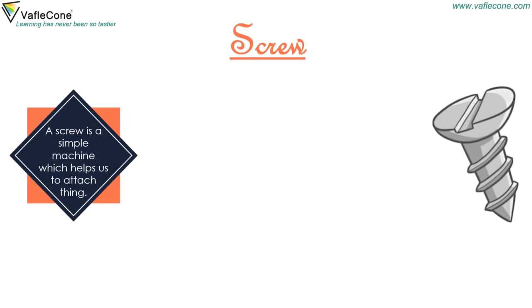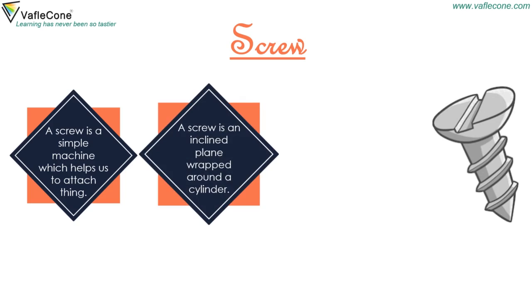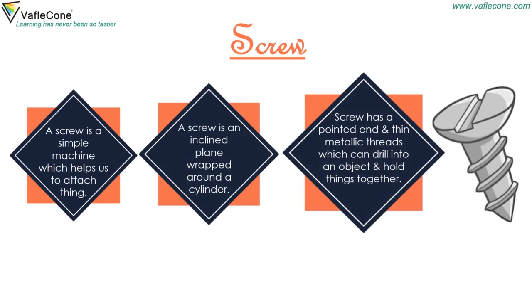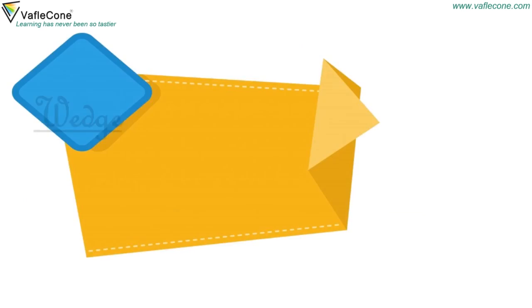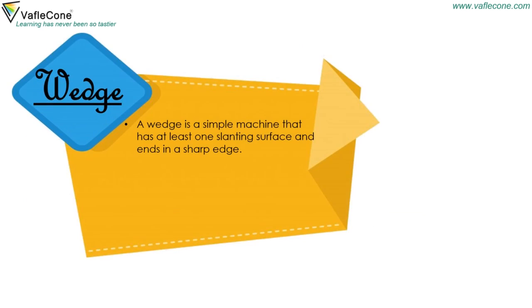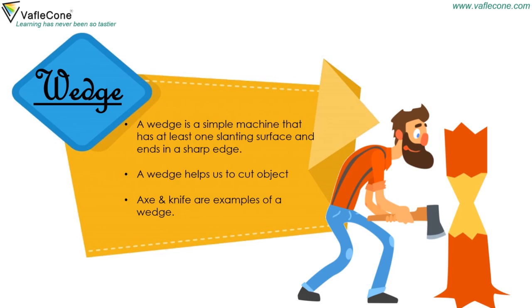A screw is a simple machine which helps us to attach things. It is an inclined plane wrapped around a cylinder, with a pointed end and thin metallic threads that can drill into an object and hold things together. A wedge is a simple machine that has at least one slanting surface and ends in a sharp edge. A wedge helps to cut an object — an axe and a knife are examples of a wedge.